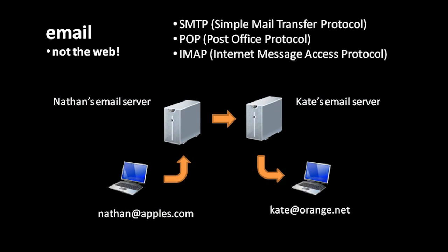The web is the part of the internet which people spend most of their time with, but it's not the whole internet. There are other things we can do with it, including email. Email is a separate application from the web — in fact, it doesn't use HTTP; it uses other protocols: SMTP, POP, and IMAP. To send and receive email you need an email address, which has the form of a username followed by the at symbol — which looks like an 'a' with a circle around it — and then a domain name. The domain name specifies where an email message should be sent on the internet, and the username specifies the recipient at that location.